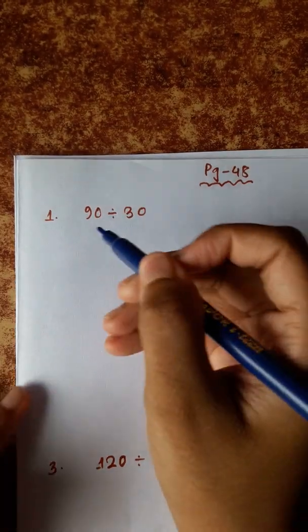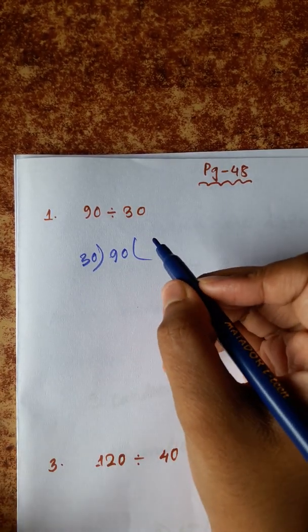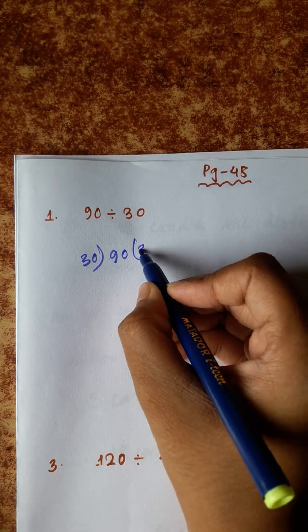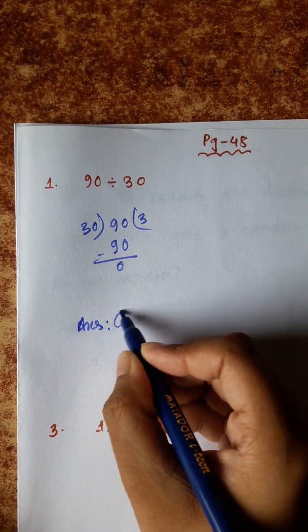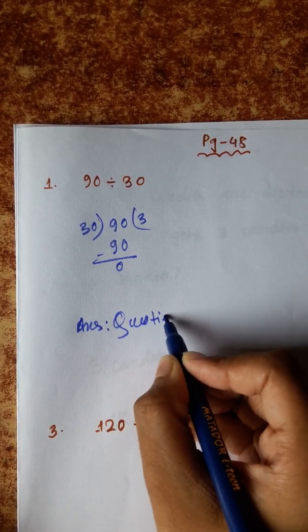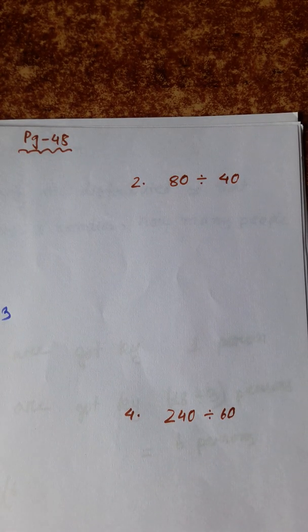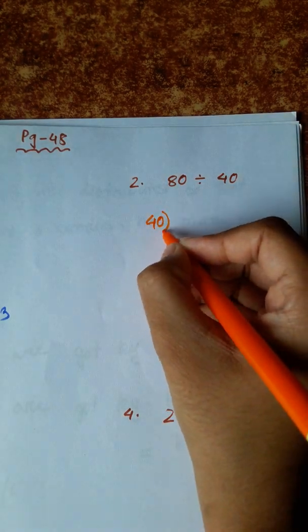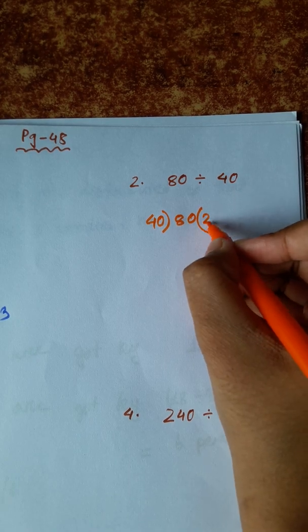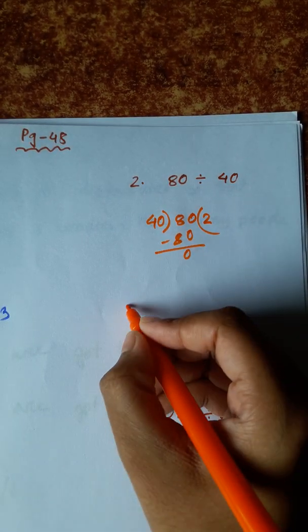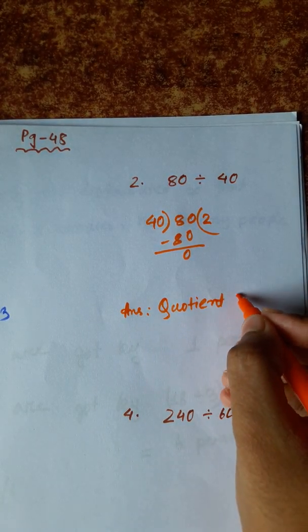Now, divisions. 90 divided by 30. 3 ones are 30, 3 twos are 60, 3 threes are 90. So answer: quotient 3. Now, 4 twos are 80. So answer: quotient 2.